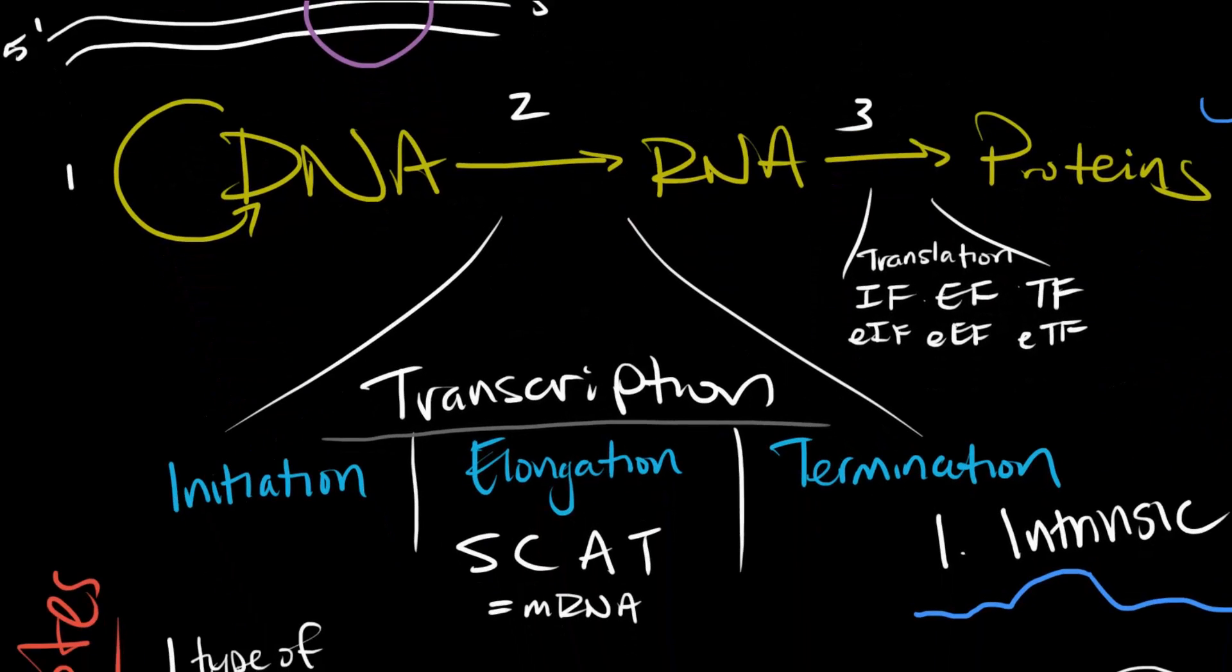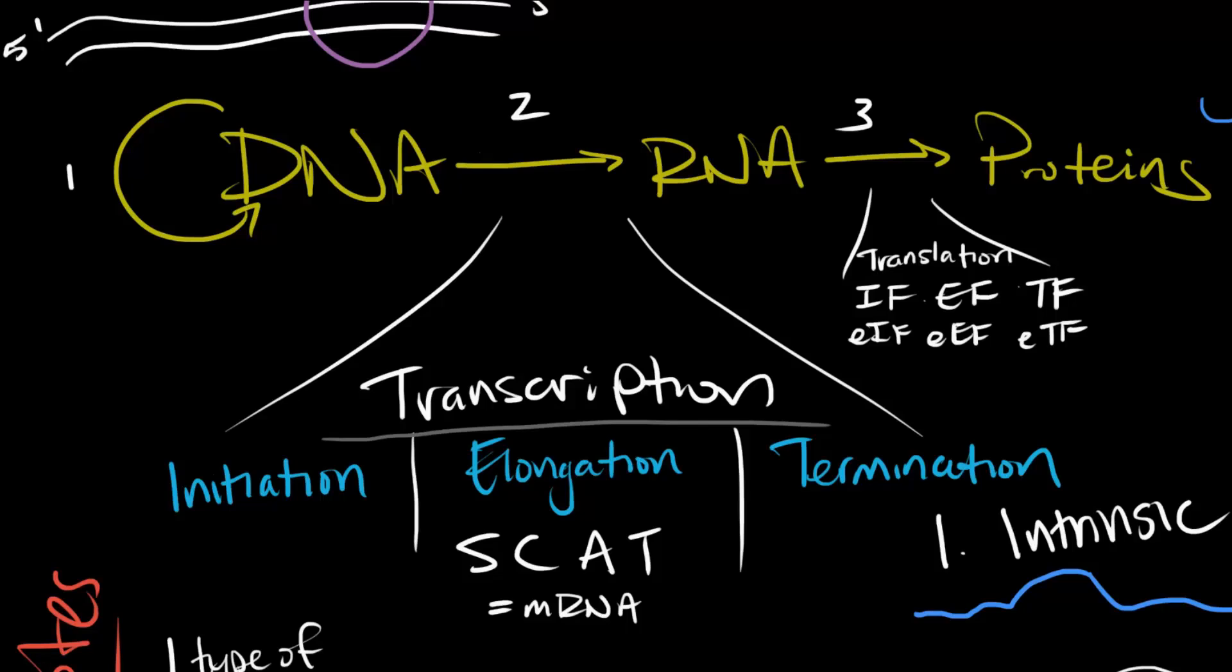DNA to RNA to proteins is the central dogma theory. To get from DNA to RNA, I have to do transcription, which is what this video is about. Each process can be broken up into three parts: initiation, elongation, and termination.